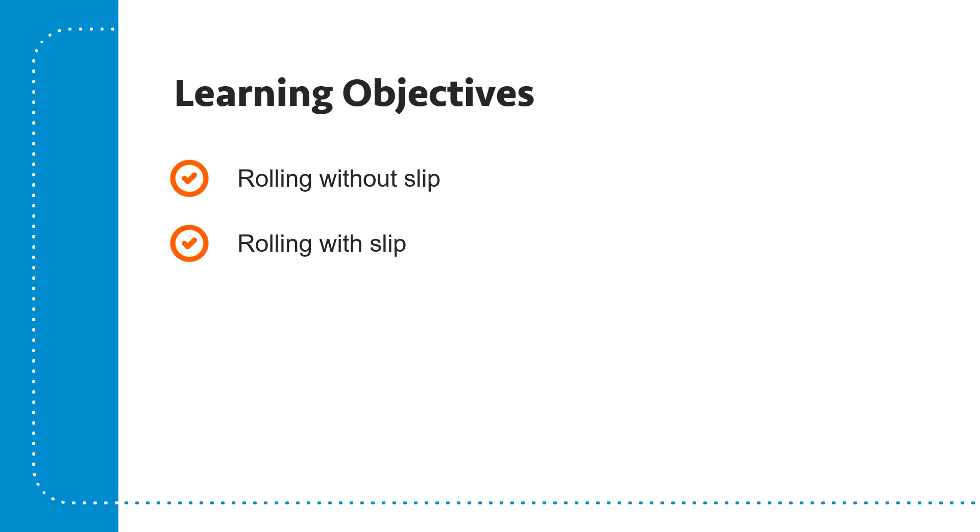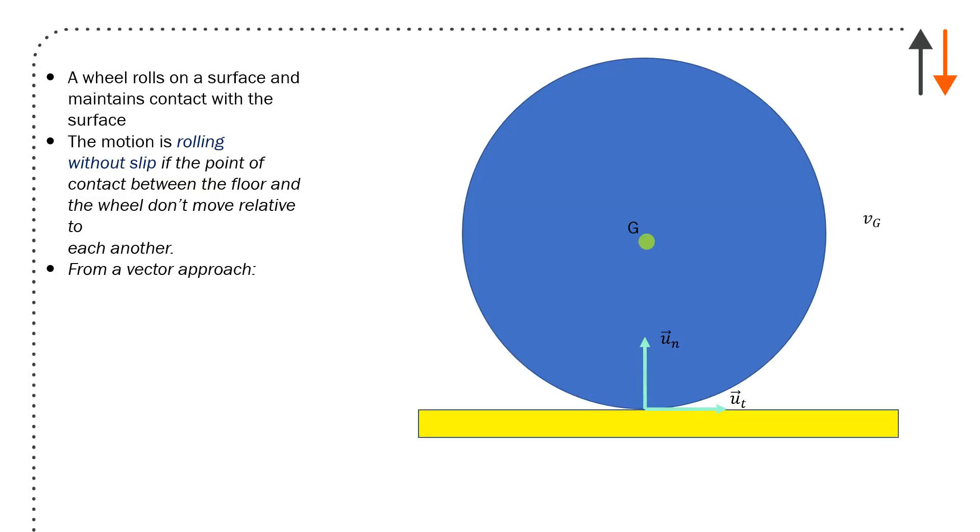It ends up being a question of how do you deal with this in that particular case. I have a wheel that's rotating on a surface. It maintains contact with that surface. And what will happen is that if the motion is rolling without slip, that point of contact over here, which is given by that axial coordinate right here. The motion is rolling without slip if the point of contact between the floor and the wheel don't move relative to each other.